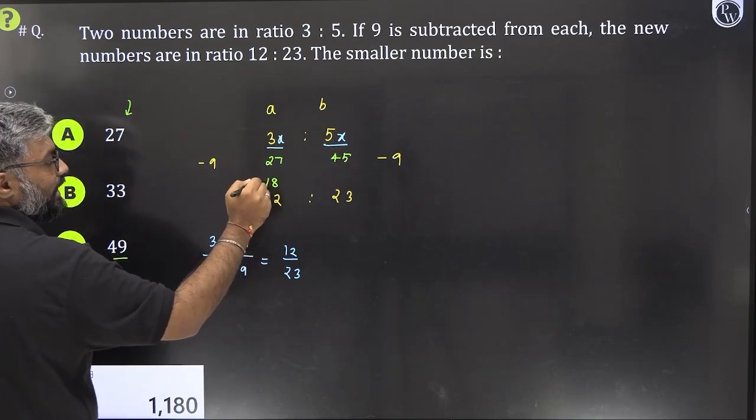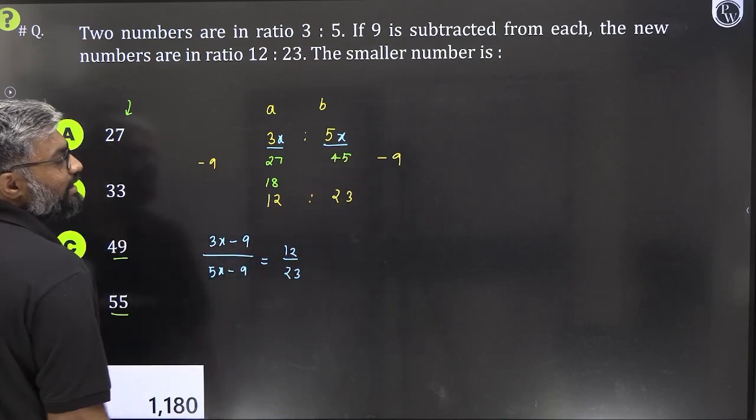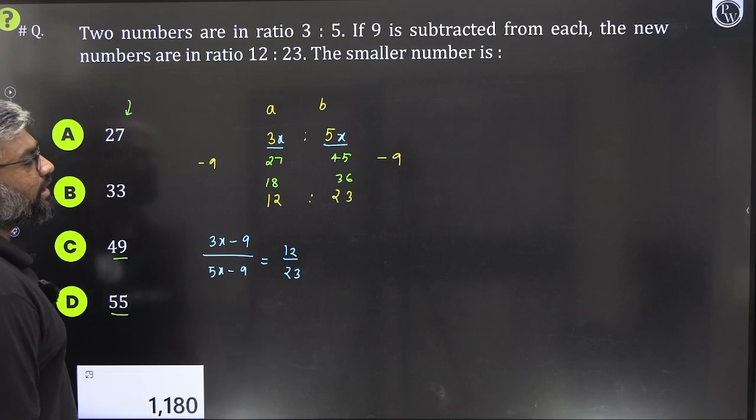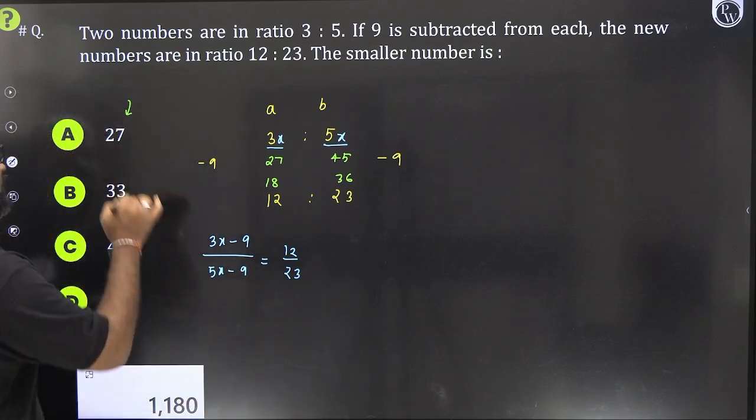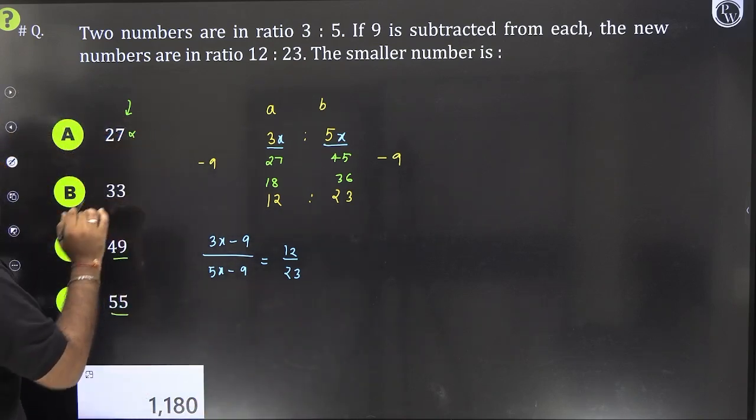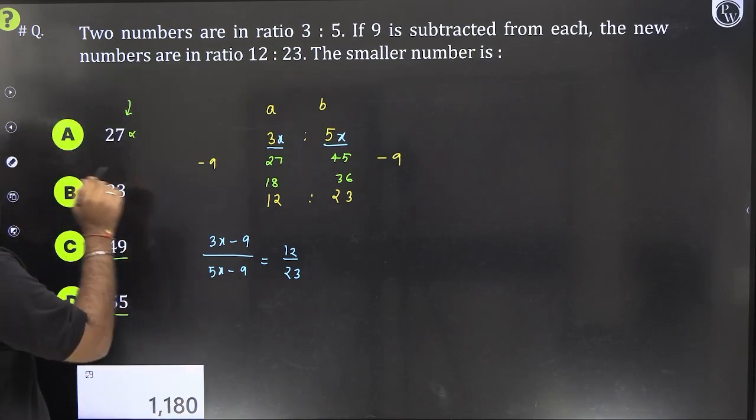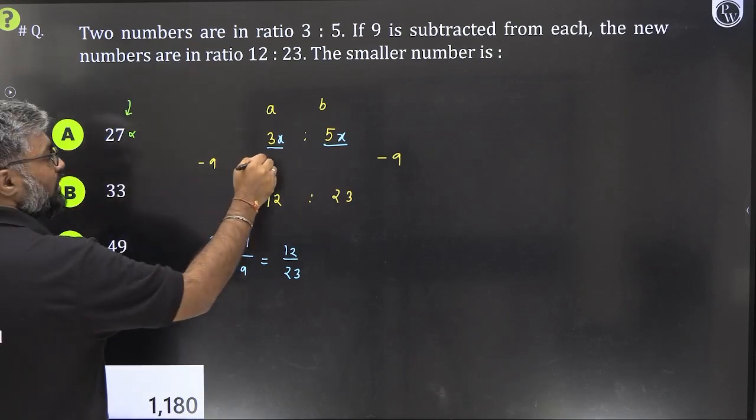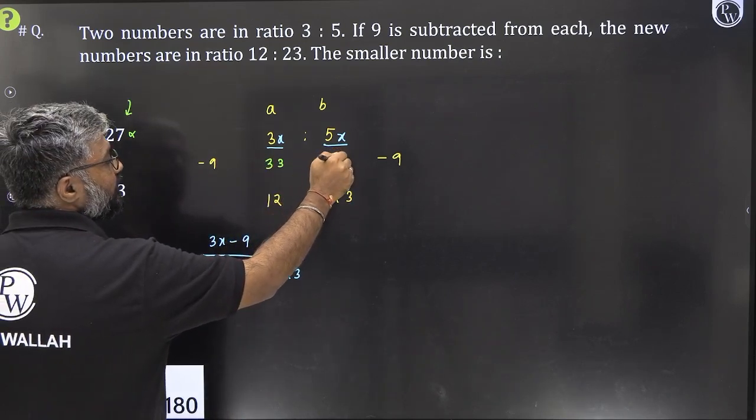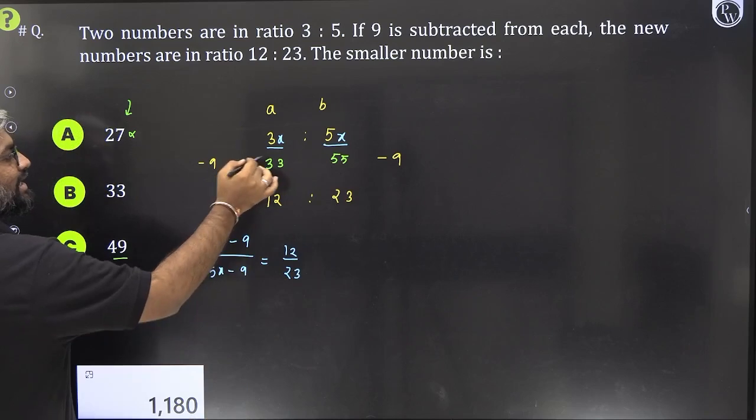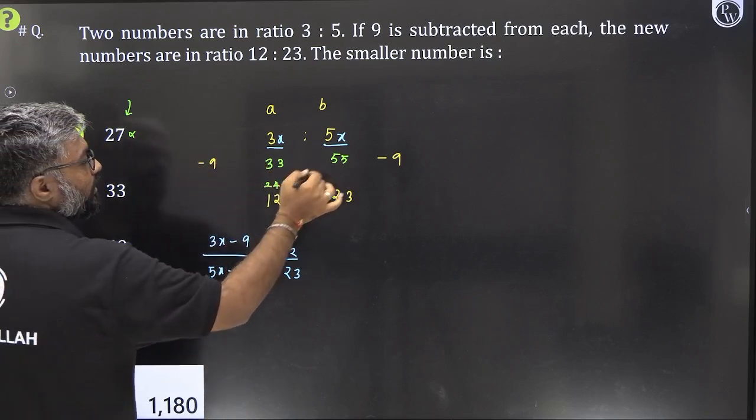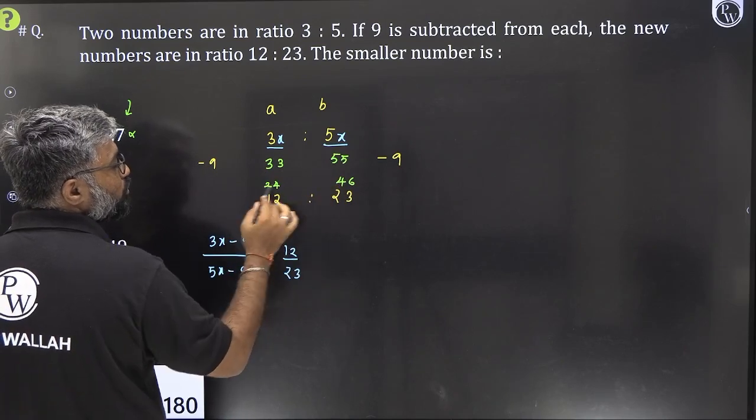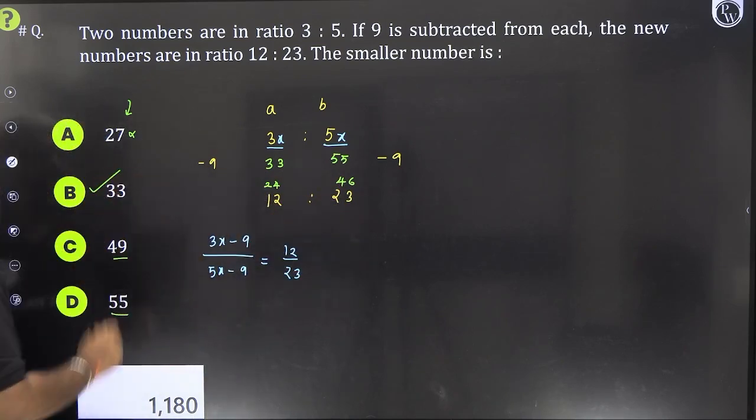Kya ye 18 or 36, 12 is to 23 ka ratio follow karta hai? Definitely not. So, 27 is ruled out. What about 33? Check for 33. Same cheez karo bhai. If this were 33 which is 3 into 11. Agar ye 33 that's 3 into 11, so 55 hoga 5 into 11. 33 minus 9 is what? 24. 55 minus 9 is what? 46. 24 is to 46. 2, 2 cancel. 12 and 23. This is our answer.